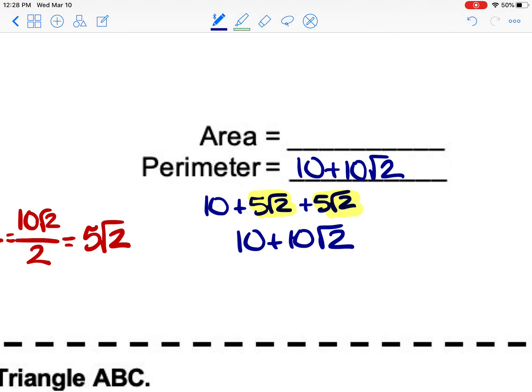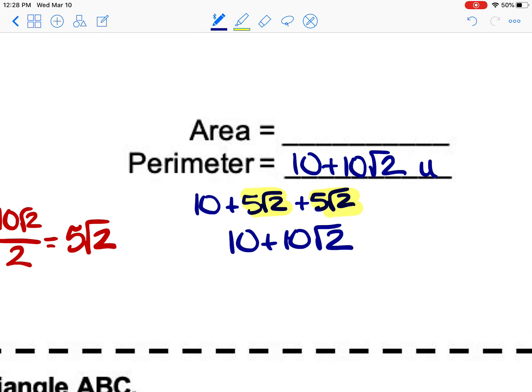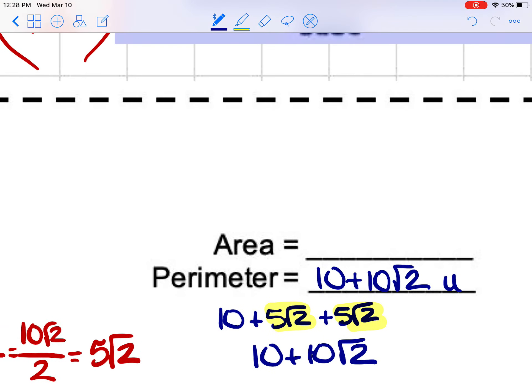It didn't give us a unit, so we'll just put units there. So now let's find the area. Remember, base times height divided by 2. We said our base and height were both the same. They're both 5 square root of 2.